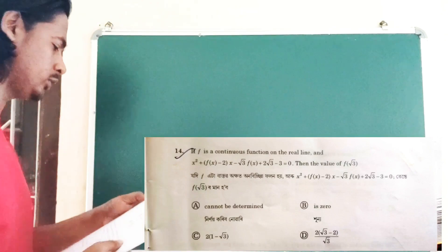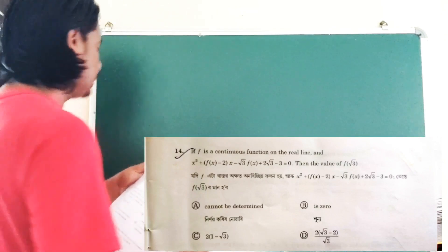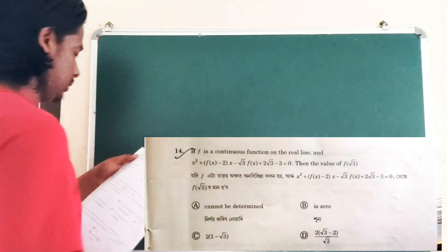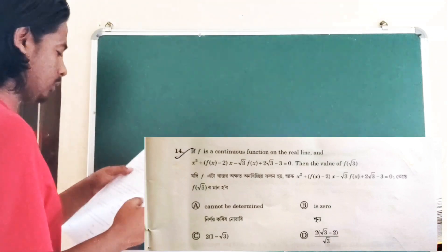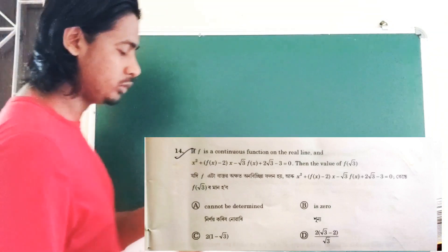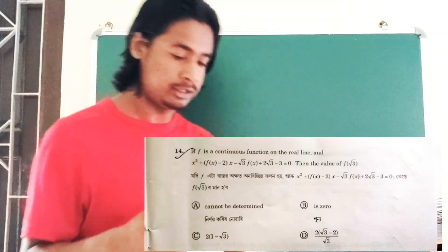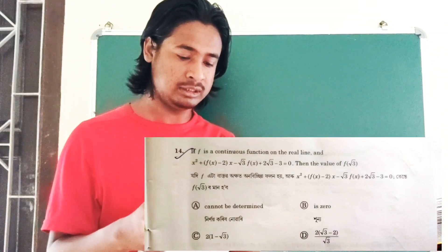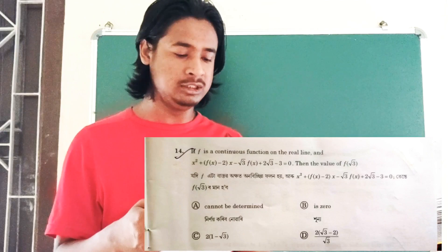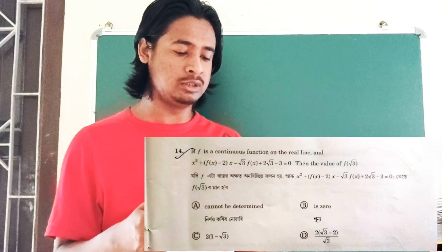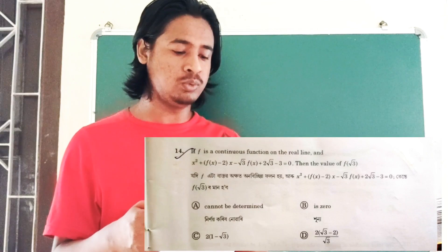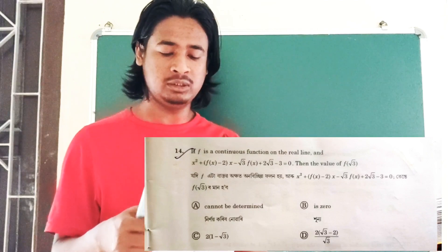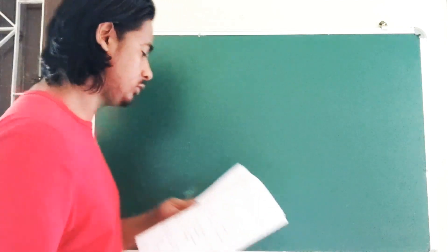The options for question 14 are: option A — cannot be determined; option B — f(√3) is zero; option C — 2(1 - √3); option D — 2(√3 - 2) divided by √3.